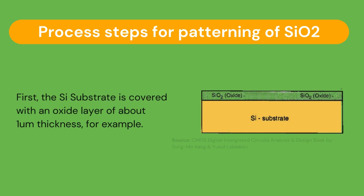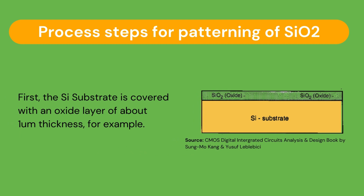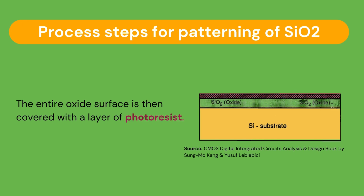The first step in patterning the silicon dioxide layer is to start with the thermal oxidation of the silicon surface of the silicon substrate with an oxide layer. This entire oxide surface is then covered with photoresist, which is essentially a light-sensitive organic polymer.